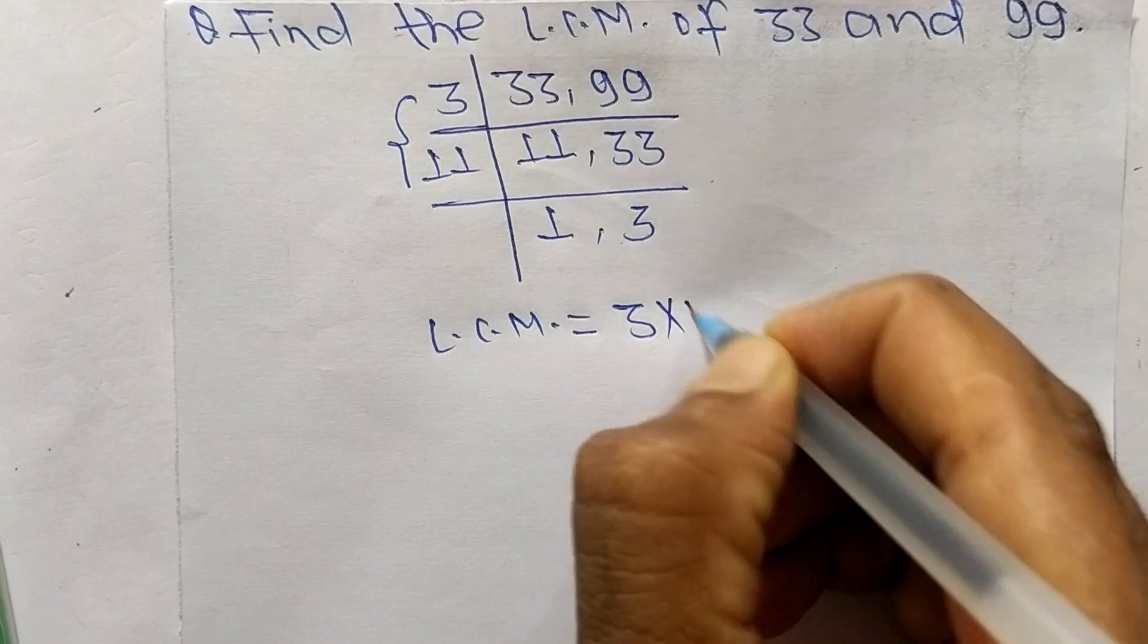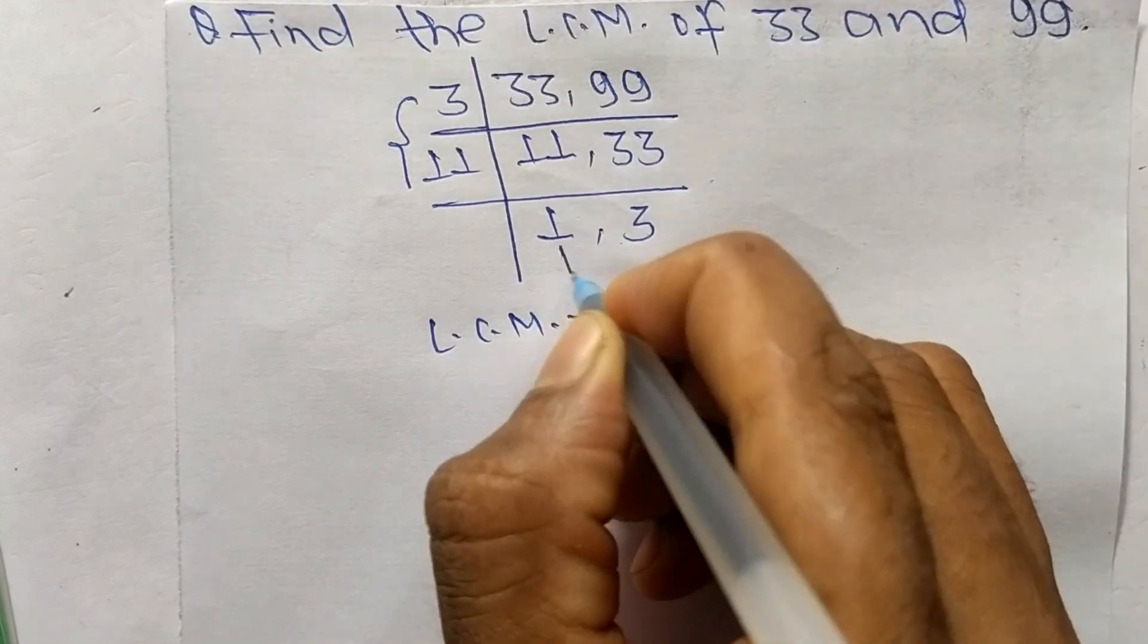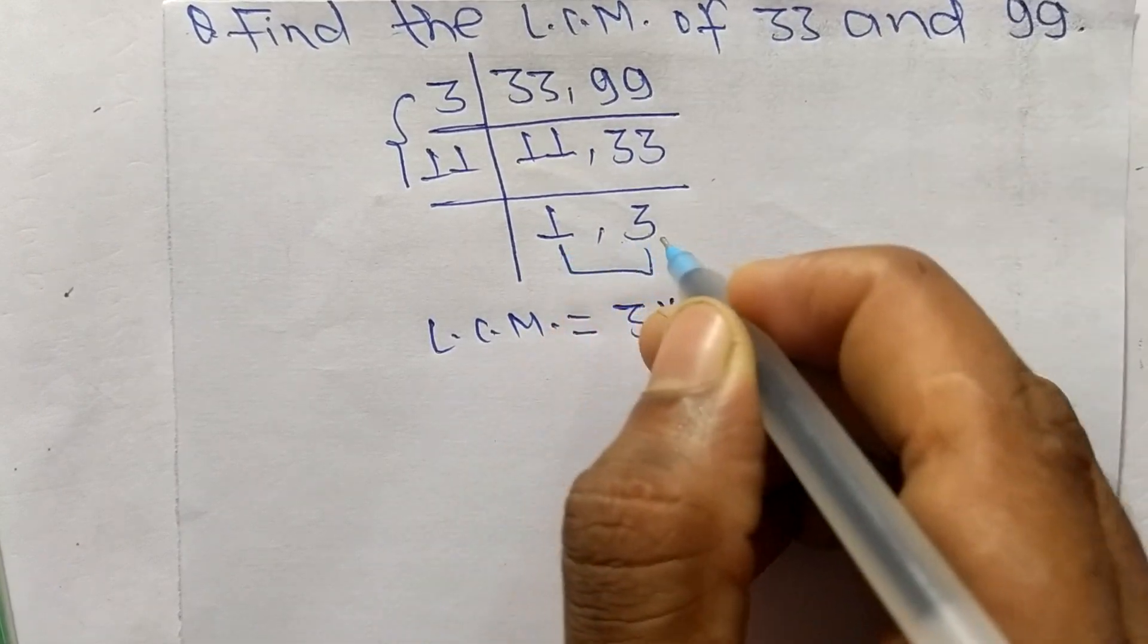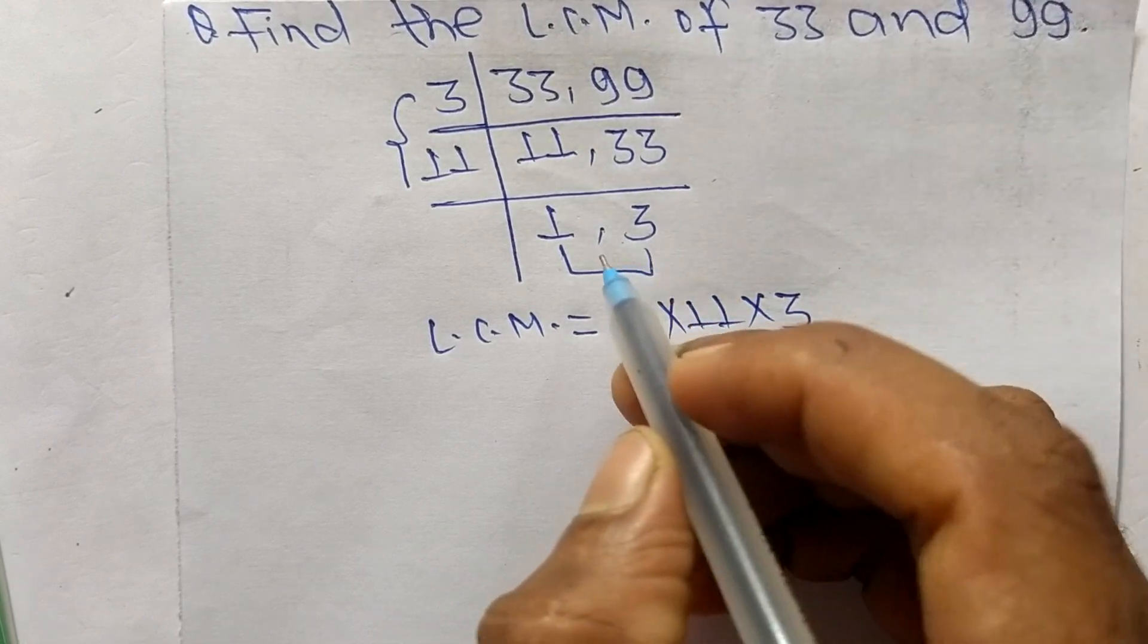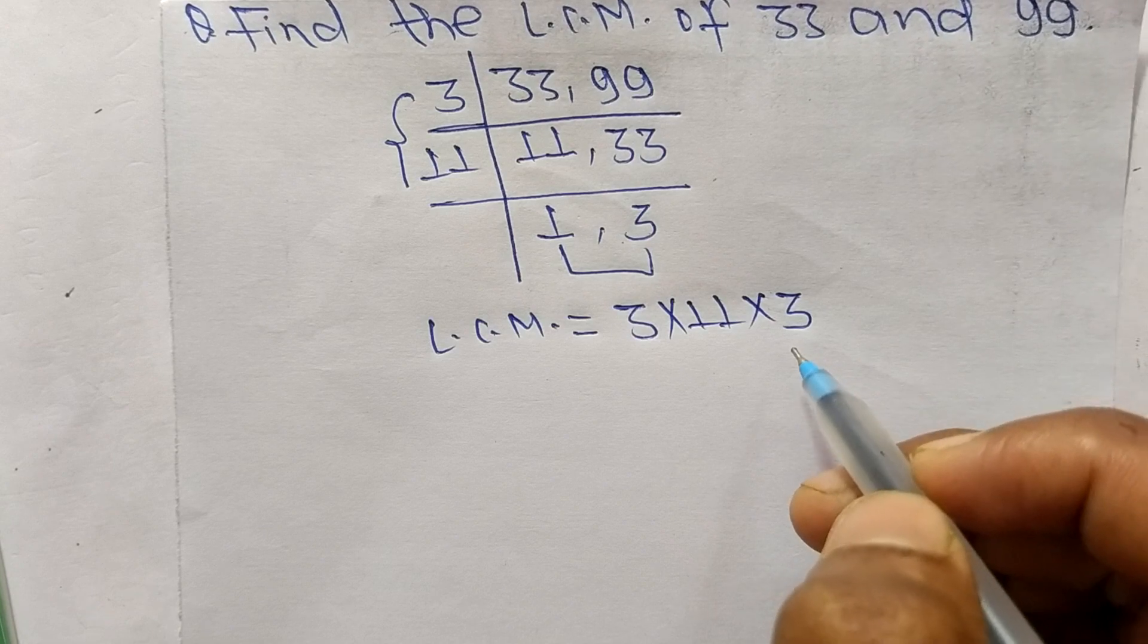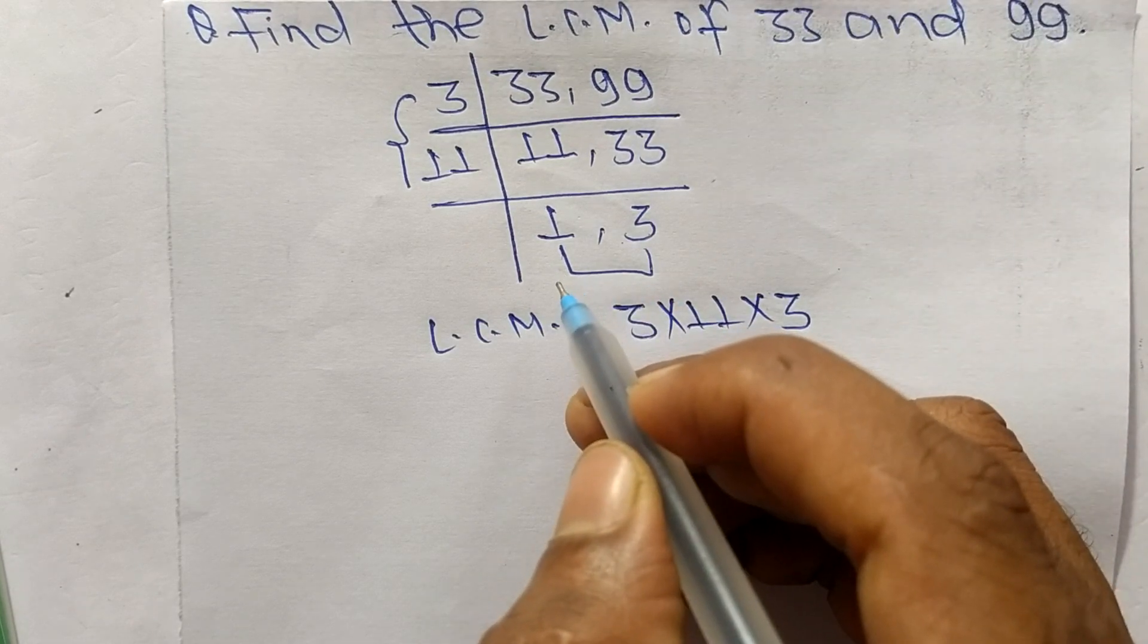And from this part we have 1 and 3, and we take here only 3 and we neglect 1 because by multiplying any number with 1 we get the same result, so we don't take it here.